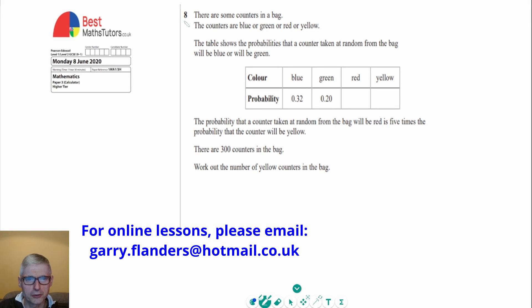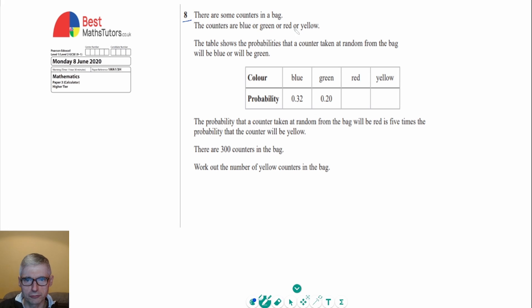This is question eight and it's a question about a probability table. I'm going to have to use a bit of algebra as well to solve this. So it says there are some counters in a bag and we've got either blue, green, red or yellow counters, which we can see we've got on this table.